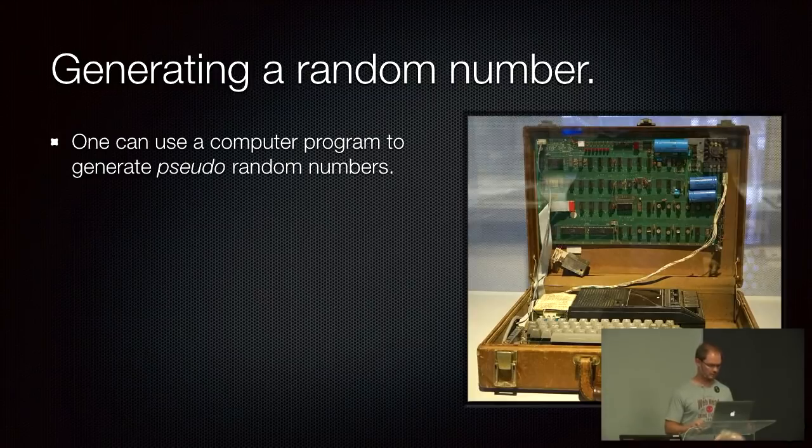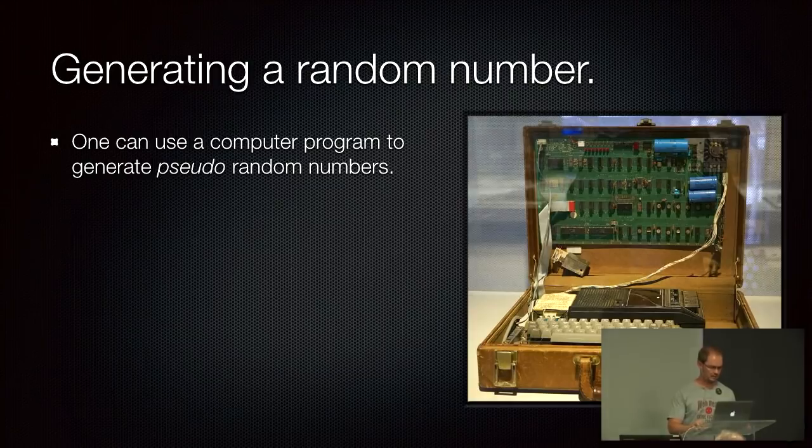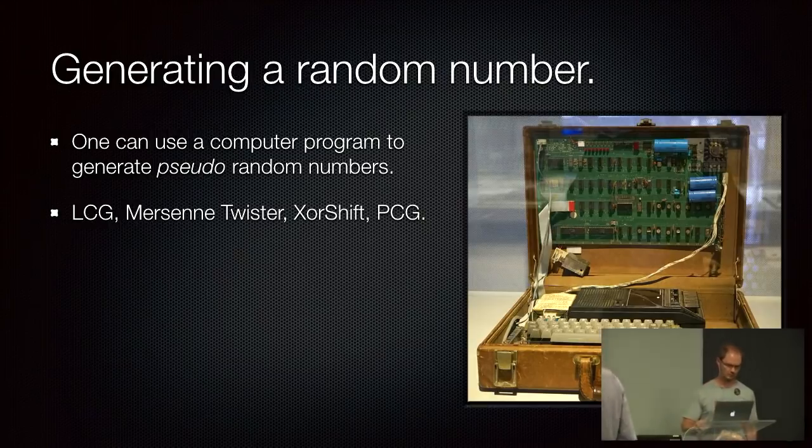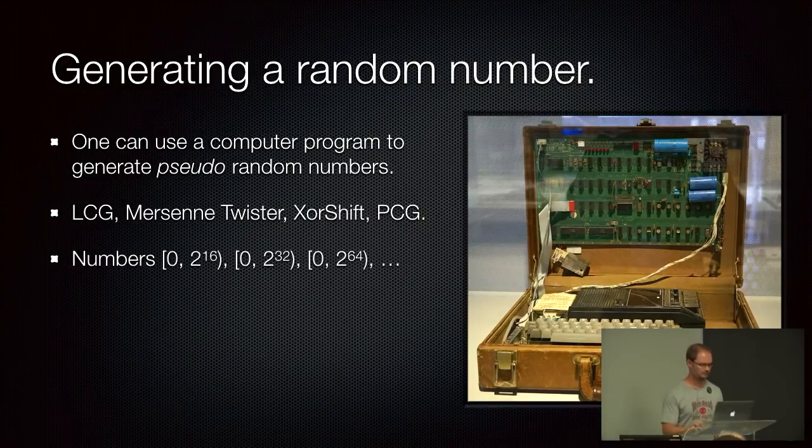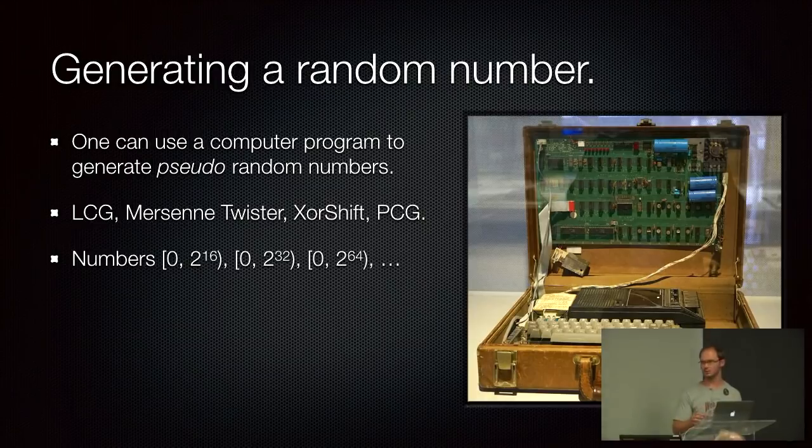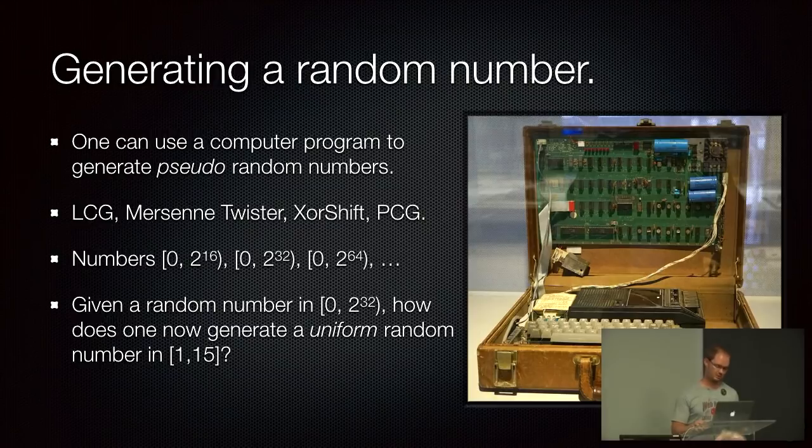Now, one could also use some math and a computer to do this. In that case, it's called a pseudo-random number because it's kind of a machine starting from a specific point generating random numbers. So you typically have to seed it to start at some point, and you can re-seed it to start at a different point. But you can use a program to generate a sequence of random numbers. And the known algorithms to do this is like the linear congruential generator, mersenne twister, xorshift, or PCG. So some of these names should sound familiar to you at least. And these kind of give you numbers in the binary word ranges. So it's maybe 0 to 2 to the 16 non-inclusive or 0 to 2 to the 64 non-inclusive. And then I pose the same question, how do you now generate a uniform random number within, for example, 1 to 15?